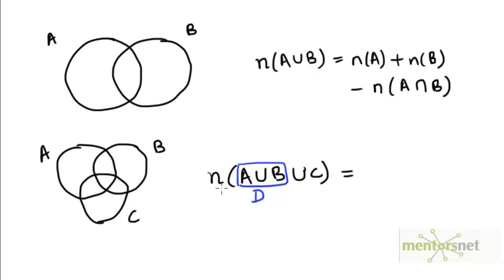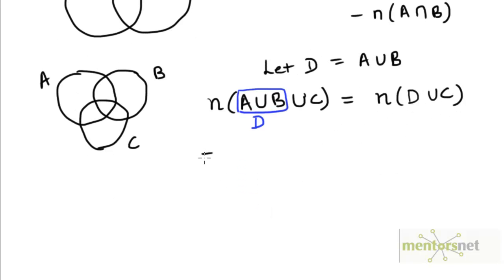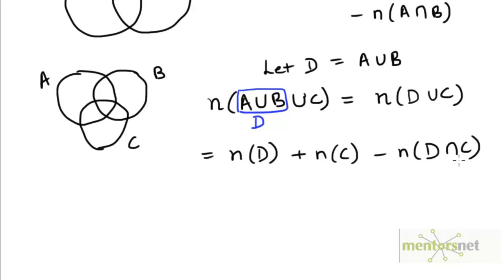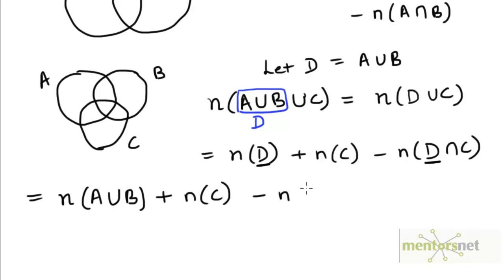Let's try that strategy. We have the number of elements in D union C, where D equals A union B. This equals the number of elements in D plus the number of elements in C minus the number of elements in D intersection C. Now we can replace A union B back in place of D. So the first term becomes the number of elements in A union B, plus the number of elements in C, minus the number of elements in (A union B) intersection C. When you have a union and an intersection in the same expression, it's important to parenthesize to indicate which operation is done first.